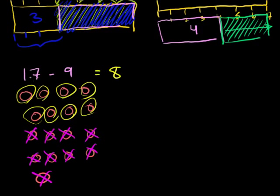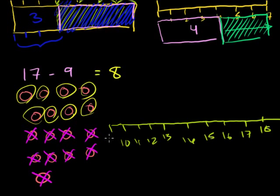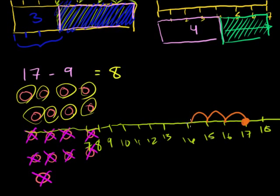But that took a long time. You can imagine if the number were much bigger, it would take forever to draw all those circles and scratch things out. Another way, which may be easier to visualize, is the number line — and you don't always have to start at 0. Starting at 17 and going left: 17, 16, 15, 14, 13, 12, 11, 10, 9, 8. I take away 1, 2, 3, 4, 5, 6, 7, 8, 9, and I land at 8.